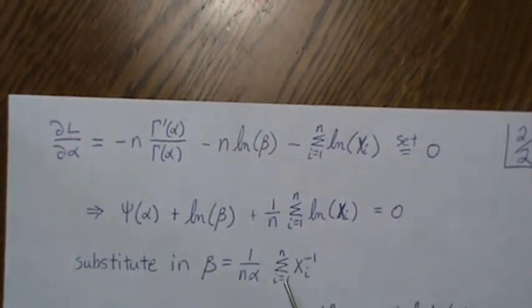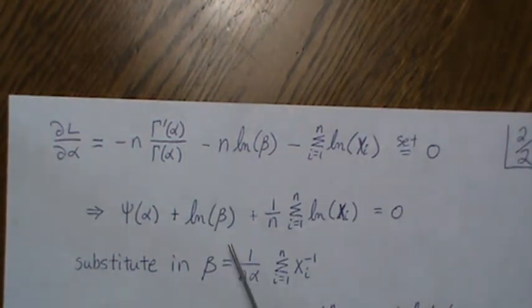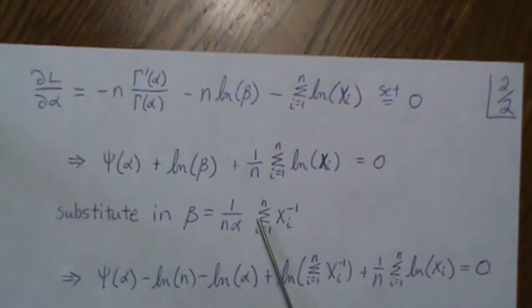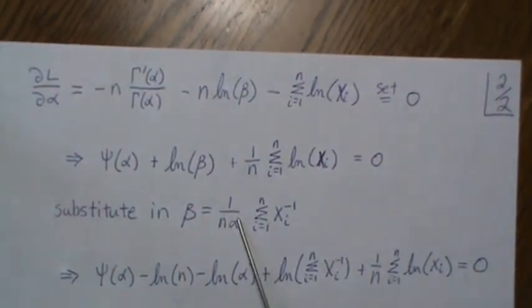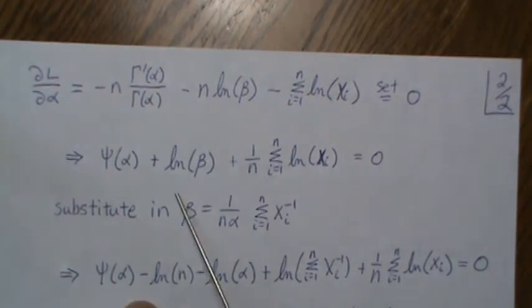Now we want to substitute in for beta, which we got on the previous page. So we have to substitute that in for here, and then we try to simplify it a little bit. So the log of this, it's a product of this, this and this, and so we separate it. The digamma function comes down.